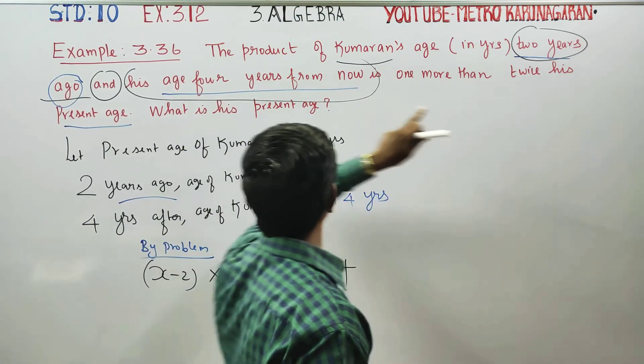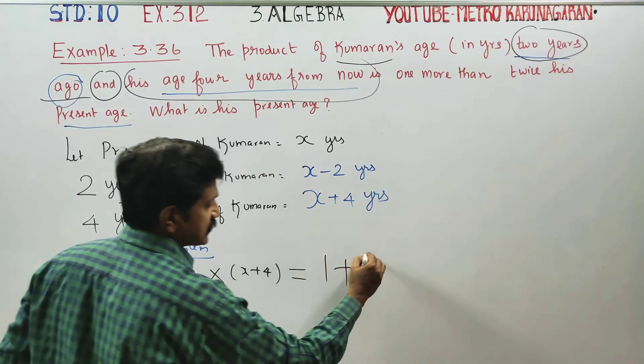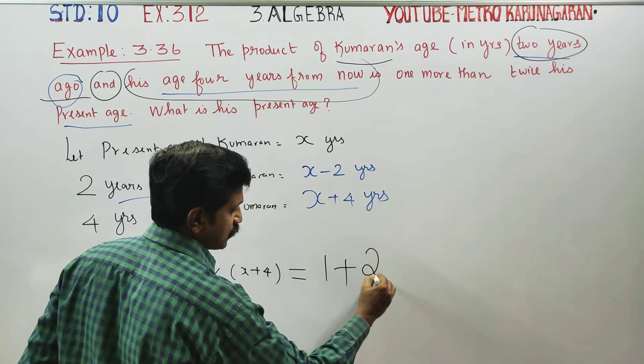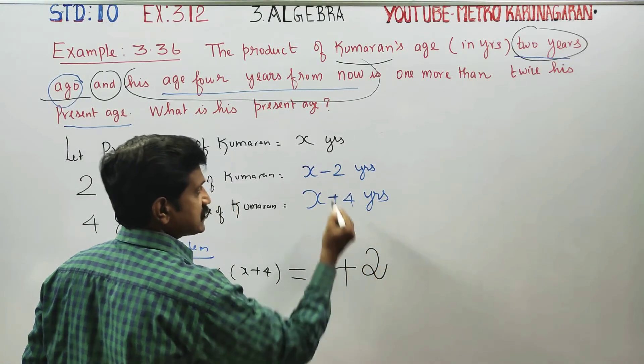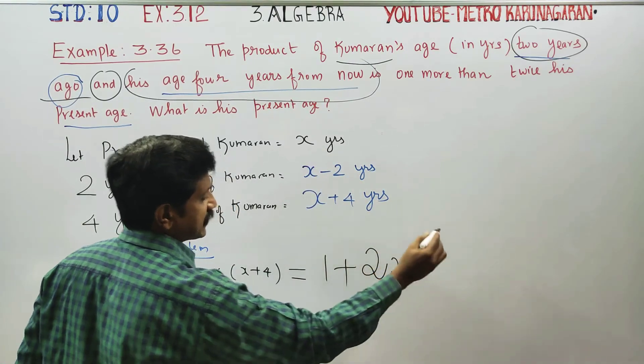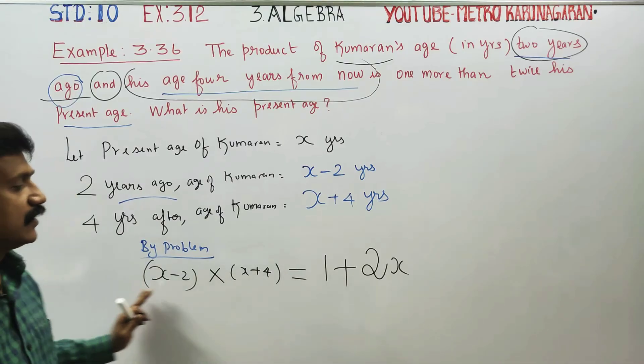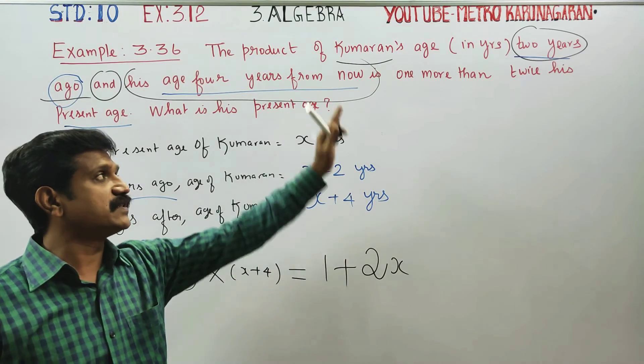That product equals one more than twice the present age. Twice the present age is 2x. This is our concept.